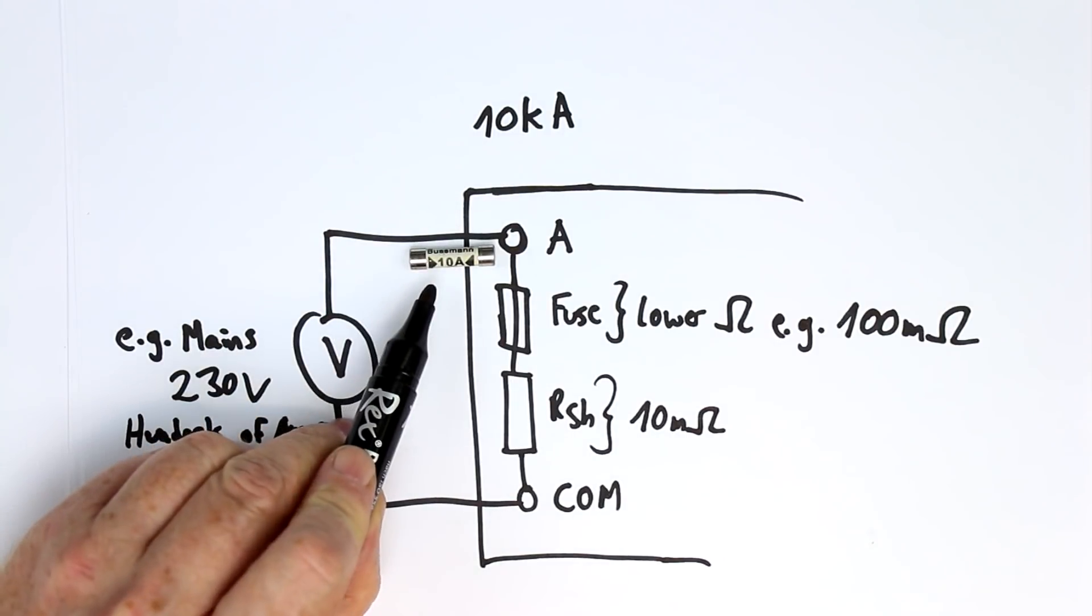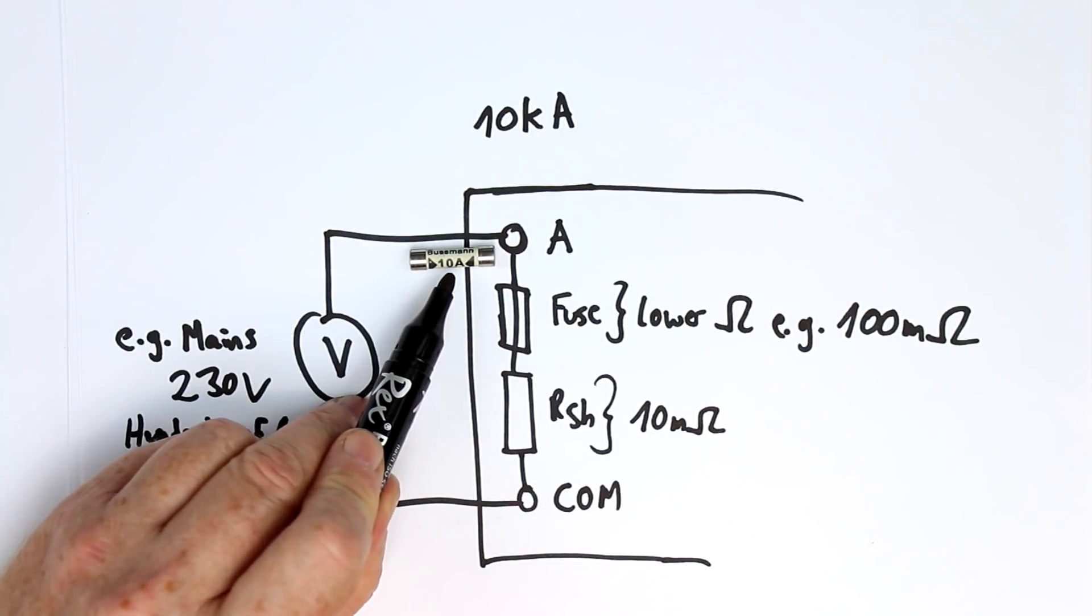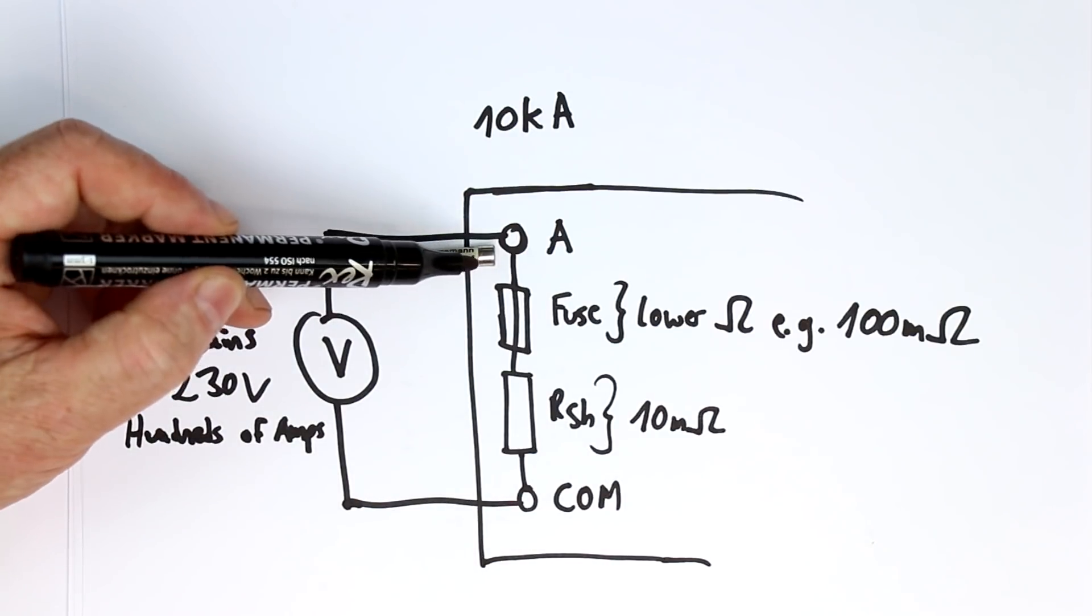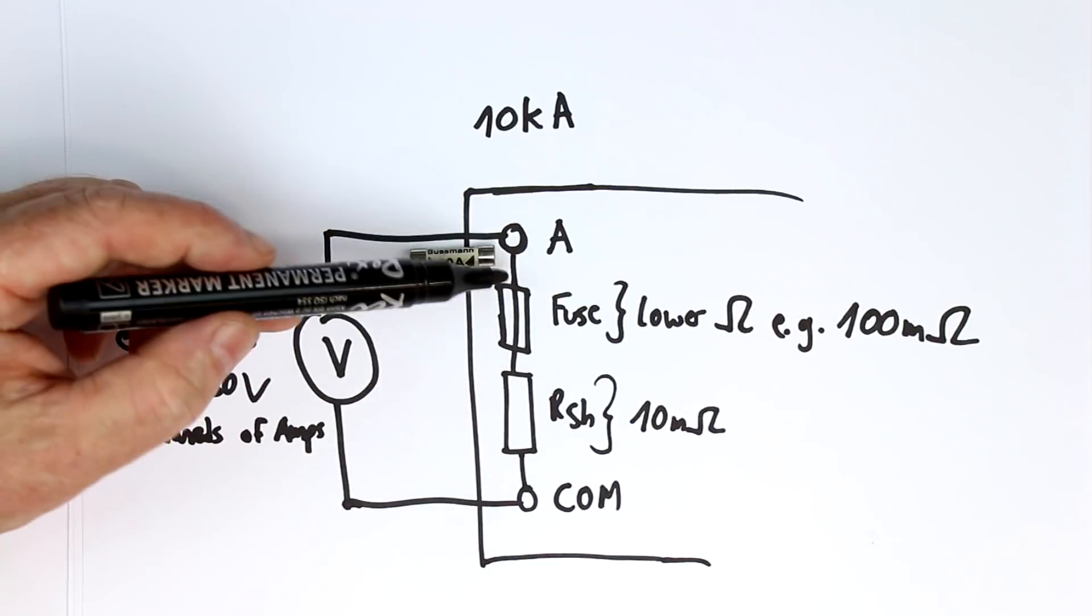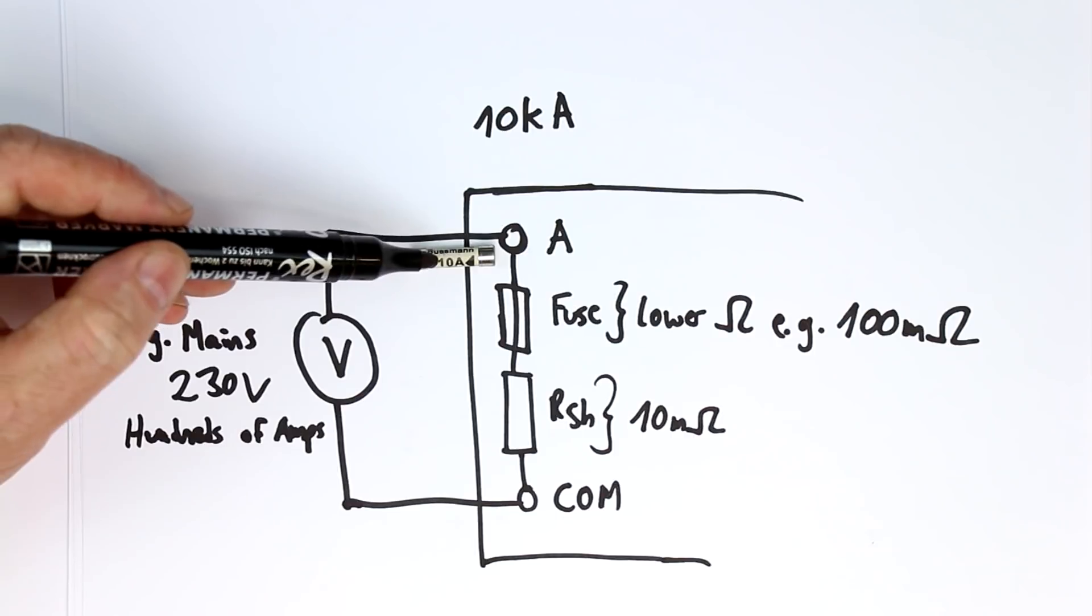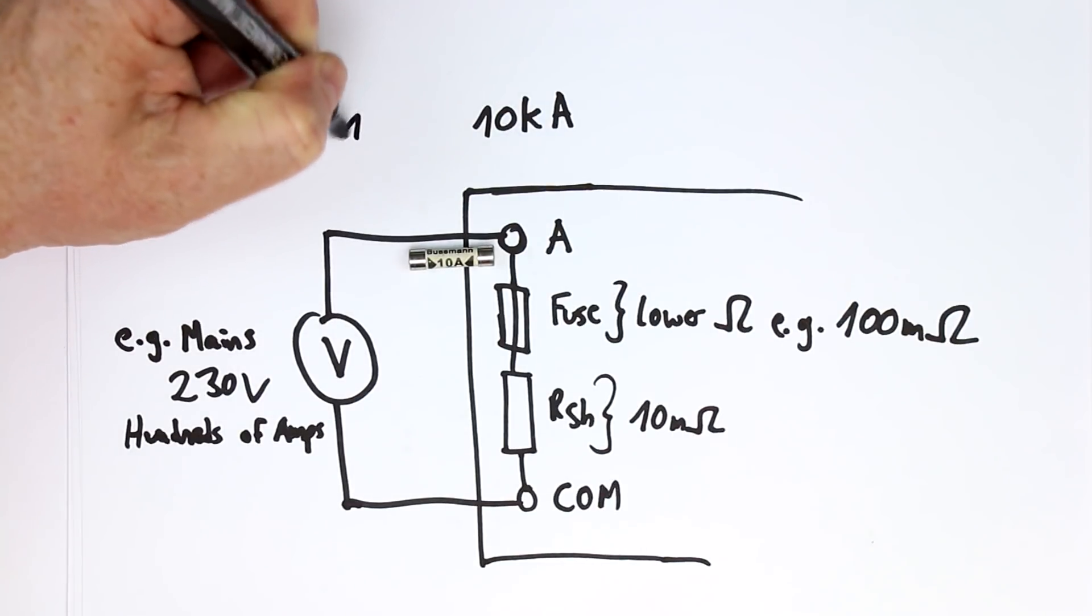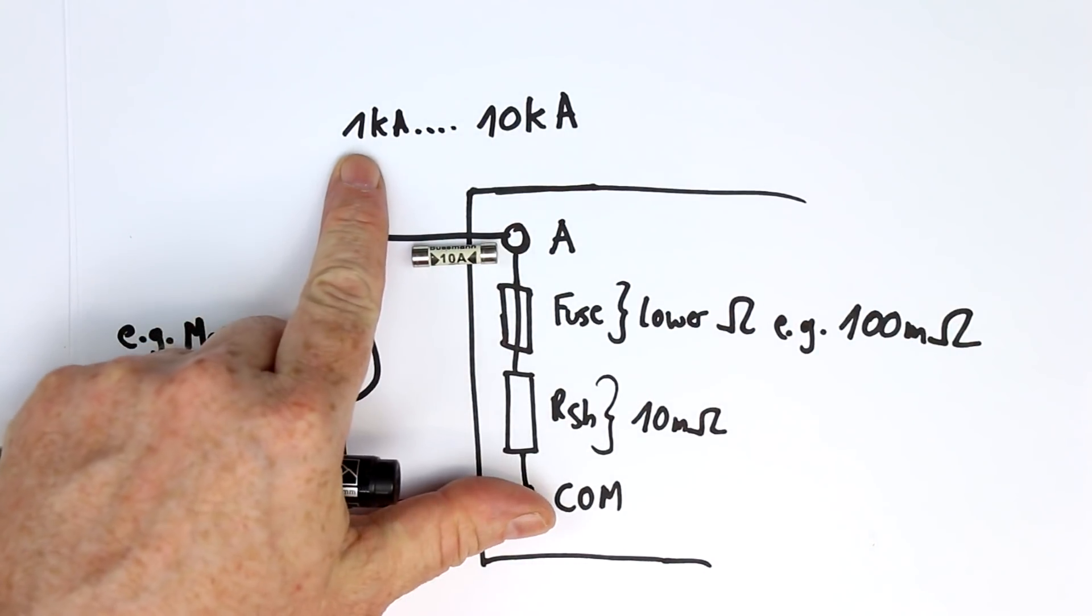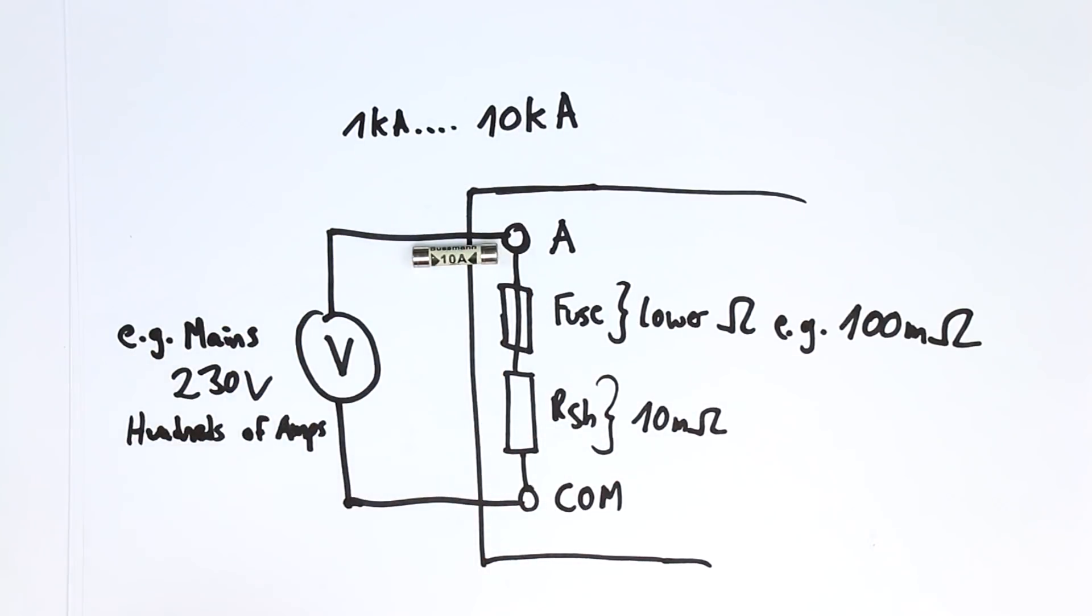And if then arcing sets in because you've accidentally connected your multimeter to a low impedance source, then they're able to quench this arc. Multimeter fuses are usually rated between 1 kiloamp and 10 kiloamps. So that's the main difference.